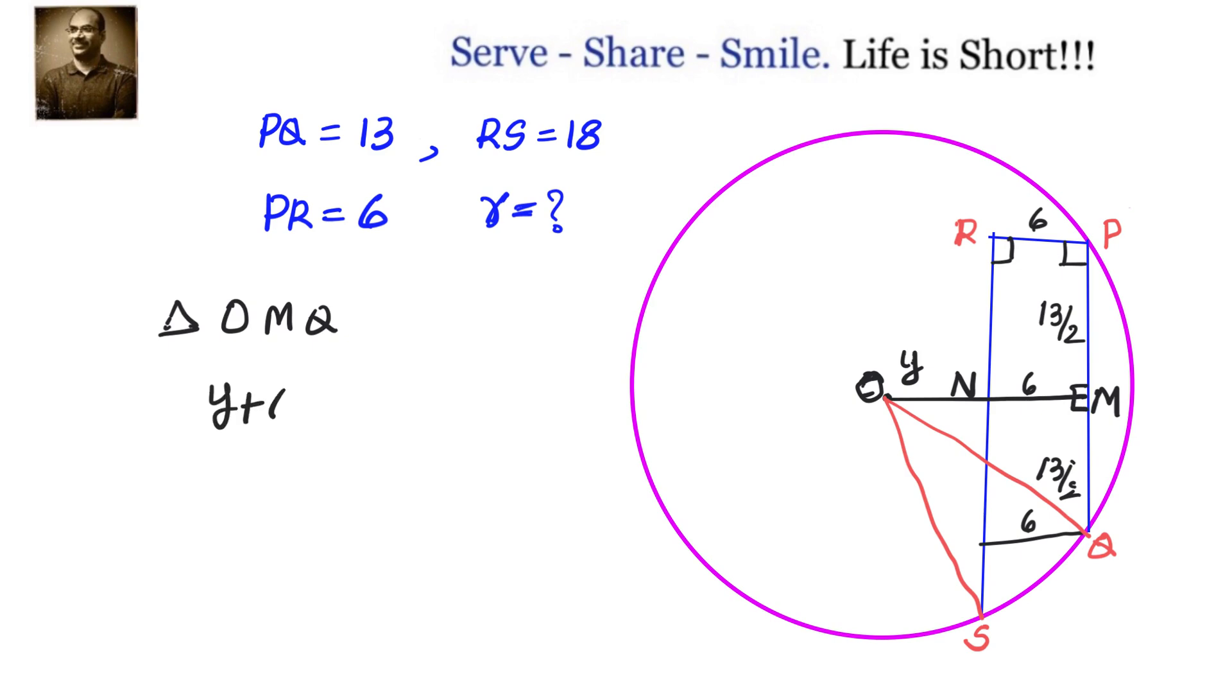Let us go ahead to the first triangle. In triangle OMQ we have (Y + 6)² + 6.5² equals R².